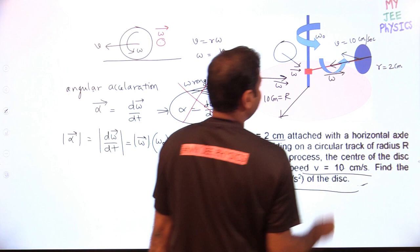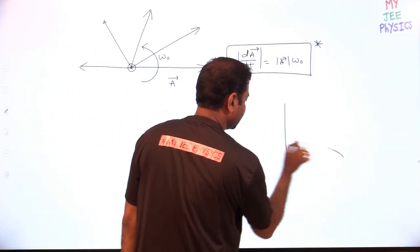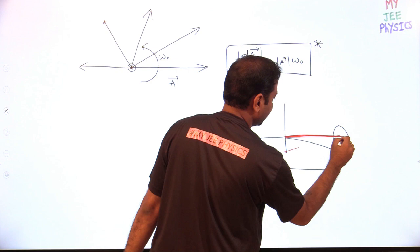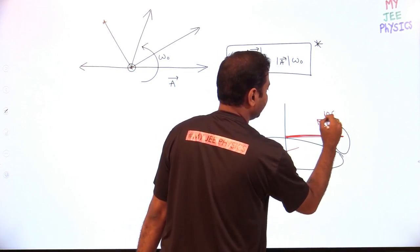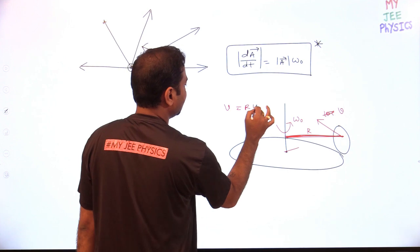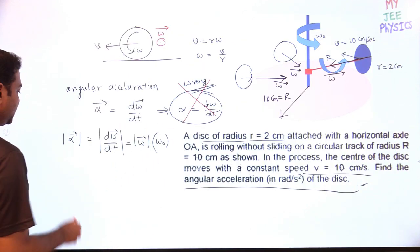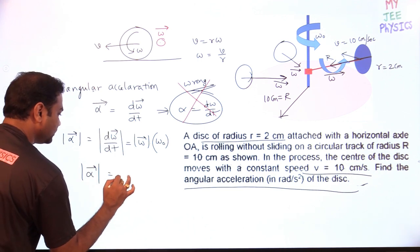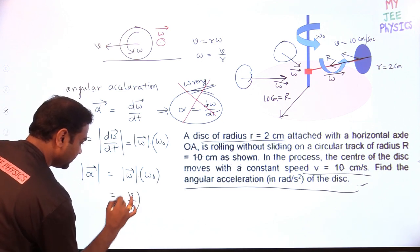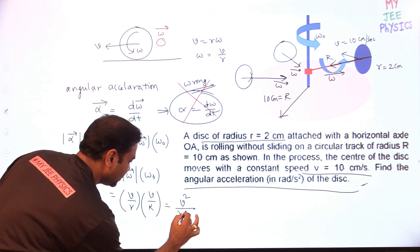To find omega_naught: the axis has radius R and tip velocity V. Looking at the circular track — the disc moves along it with velocity V and radius R. So V = R·omega_naught, giving omega_naught = V/R. Therefore, magnitude of alpha = |omega| × omega_naught = (V/r) × (V/R) = V² / (r·R), where r is the disc radius and R is the track radius.